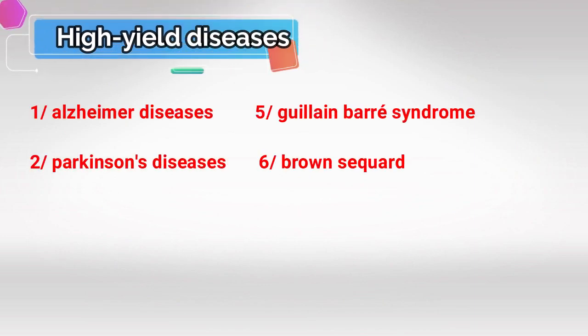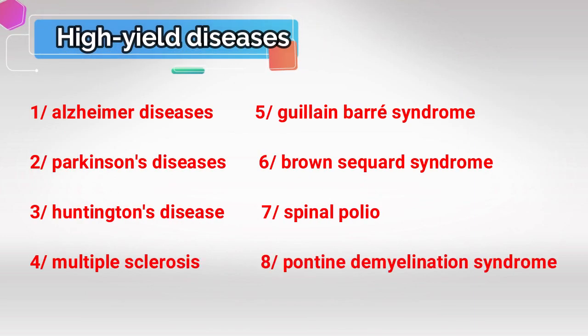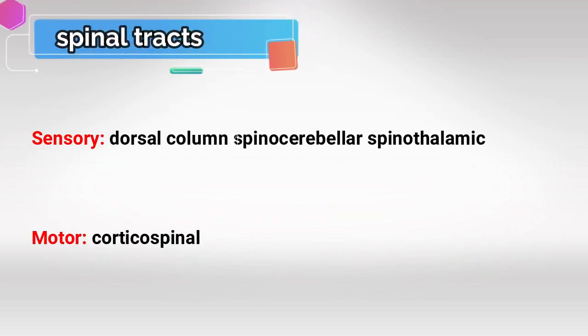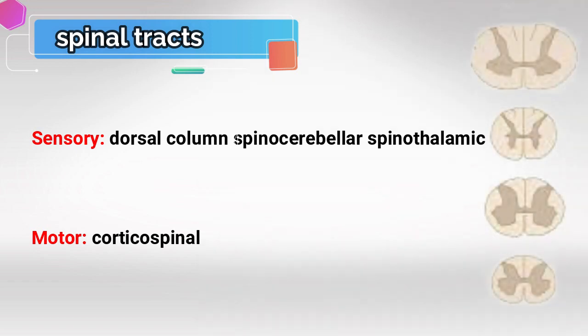Here I've summarized all the very important high-yield diseases for neurology. If you're short on time, you can start by studying these diseases first, and if you have more time, study the others — but I would recommend starting with those. These are also the spinal tracts you have to know, and try to be familiar with the spinal cord shape in different segments.